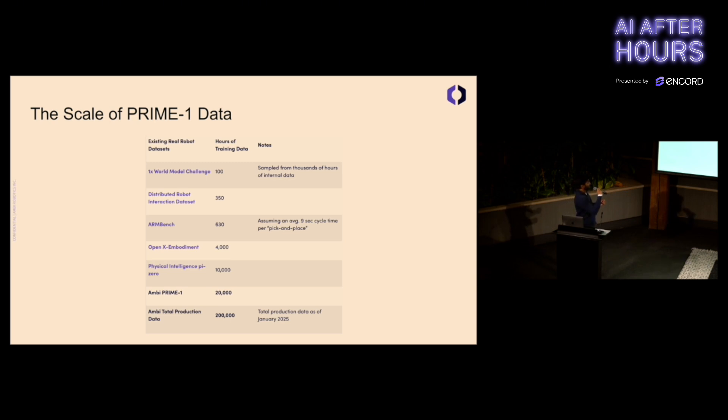These are some existing real robot data sets in terms of hours of training data. First, we have the 1x World Model Challenge, where 1x is a humanoid company, and they release some data as part of an open challenge. That's 100 hours. Then we have the distributed robot interaction data set, a popular research data set with 350 hours. Then we have Amazon's open source research Arm Bench data set with 630 hours. Then we have the Open Cross Embodiment data set, another popular research data set with 4,000 hours.